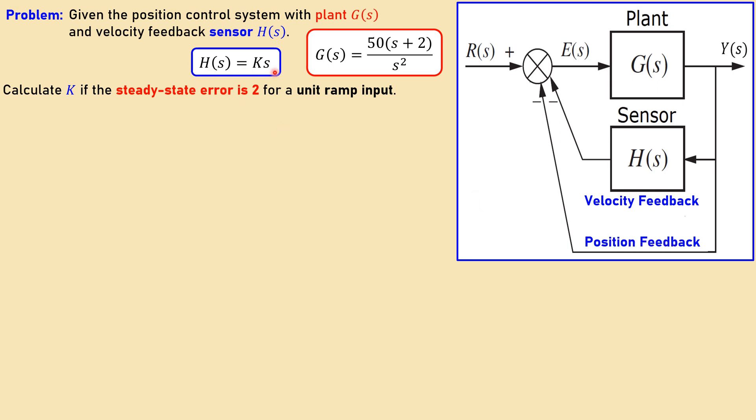You can see here from this expression of the sensor that this is K times s, which is a pure differentiator with a gain of value K. And the plant is a second order system with a zero at minus 2 and 2 poles at the origin.